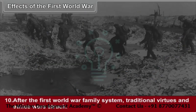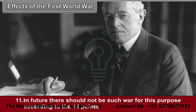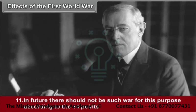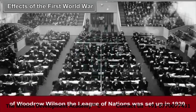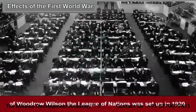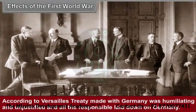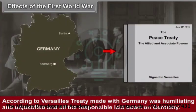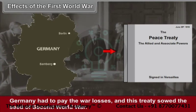Tenth, after the First World War, the family system, traditional virtues, and ethics were struck. Eleventh, so that there should not be such a war in future, the League of Nations was set up in 1920 according to the 14 points of Woodrow Wilson. According to the Versailles treaty made with Germany, it was humiliating and unjustified, and all responsibility was laid on Germany. Germany had to pay the war losses, and this treaty sowed the seed of the Second World War.